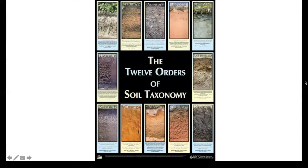Vertisols are clay-rich soils that contain a lot of clays that may shrink and swell very dramatically. Due to their high clay content, they have extremely high levels of fertility as well. But due to the clay, there are a lot of micropores that leave the soil extremely wet for long periods. They consist of about 2% of the world's glacier-free land surface.